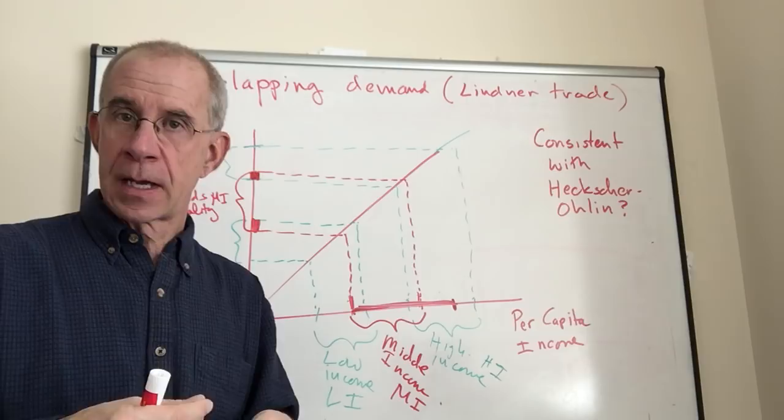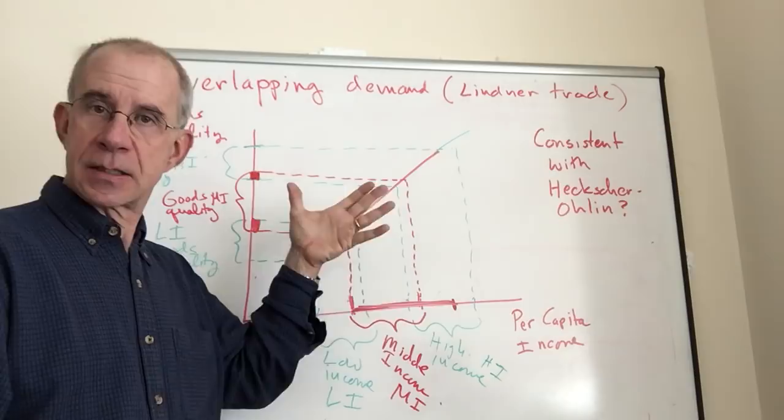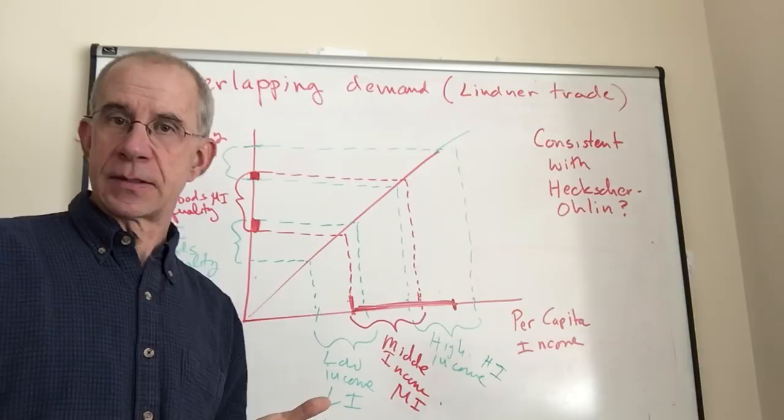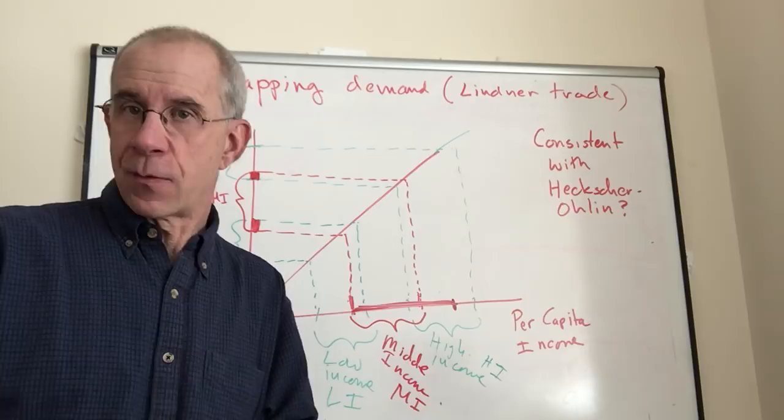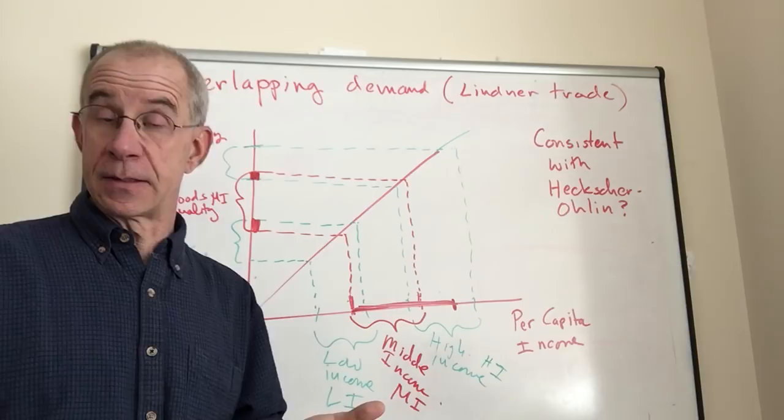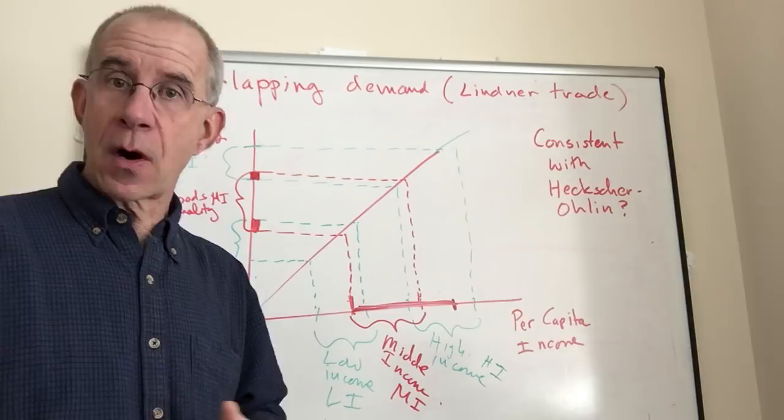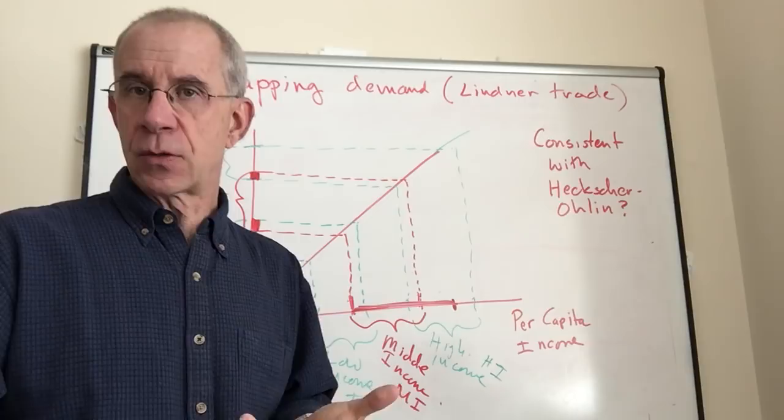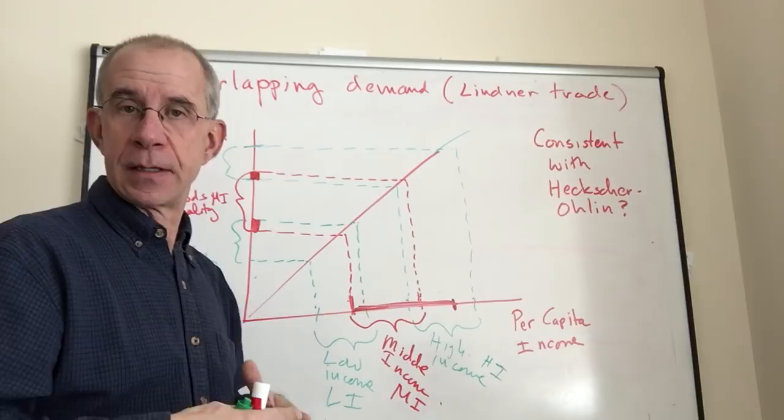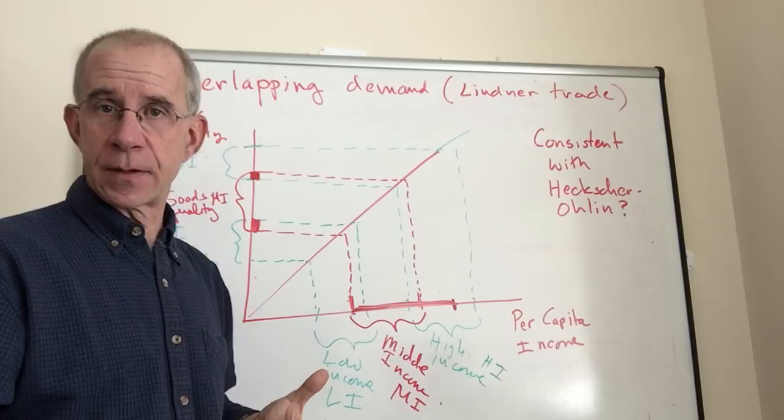It's certainly not the case that this explains all trade flows. For example, it doesn't explain why a country would import petroleum if they don't have it. That's trivially generated by other means or other sources—the technological differences we talked about with the Ricardian model, or the factor endowment differences and different factor costs from Heckscher-Ohlin is another. But this provides at least some incentive, and it really does match a lot of the empirics associated with explaining trade flows.